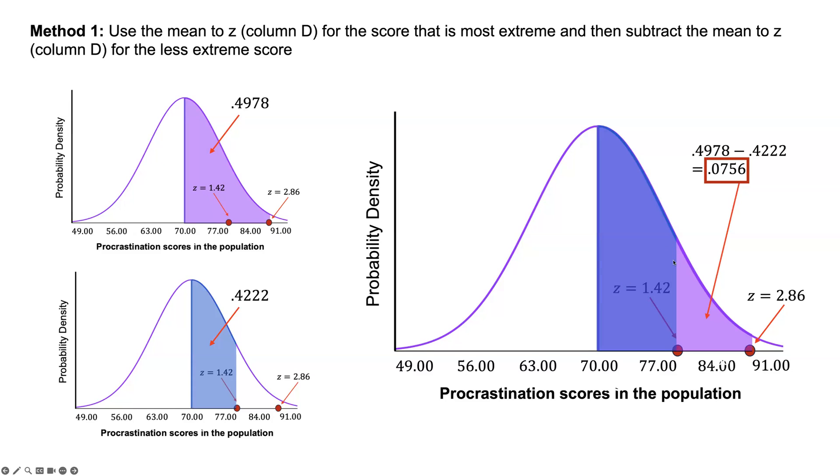Now we have two different areas we've calculated. You're seeing that if we look at both of them together, we're just taking out this part of the curve. We're subtracting that, which is this right here, from this area. That will leave us with the area we're actually interested in, the difference between those two. That gives us 0.4978 minus 0.4222, which equals 0.0756 or 7.56%. That's one method.